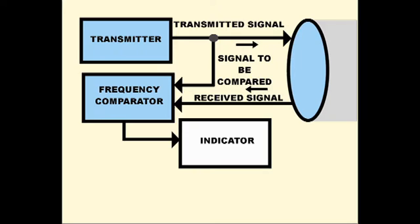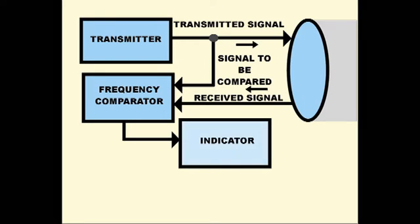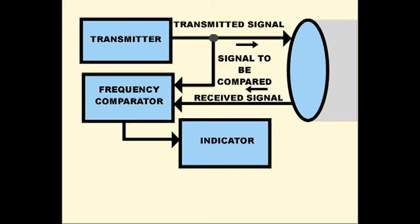If both are identical in frequency, the display indicates zero speed. If there is a difference in the frequency reflected from the vehicle, the display indicates a speed proportional to the frequency difference.